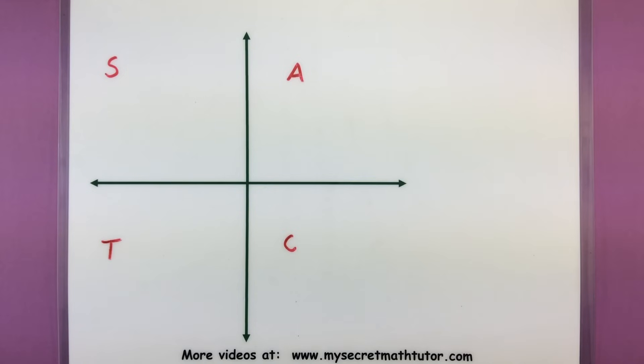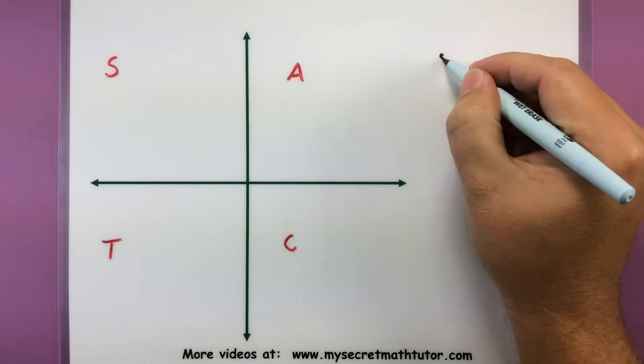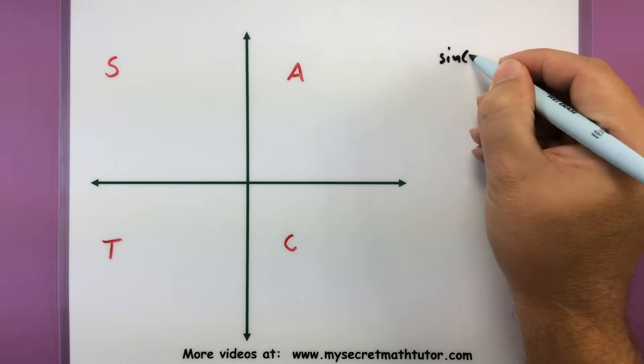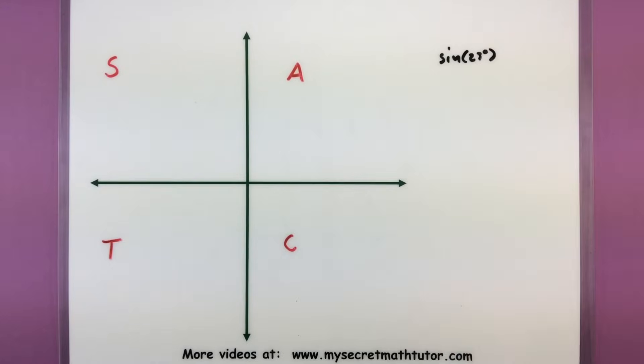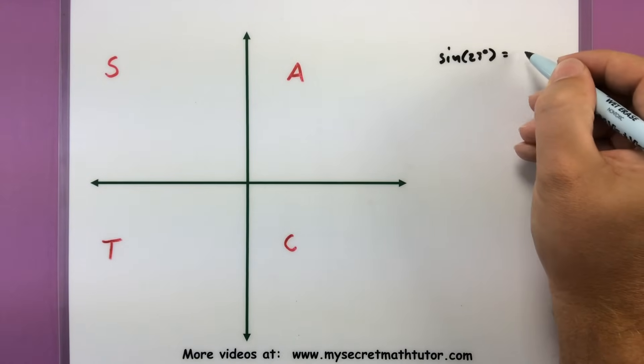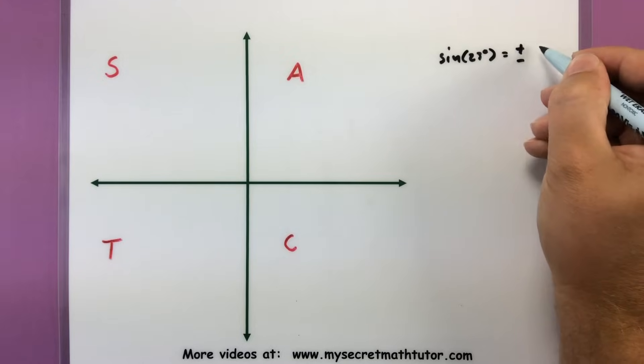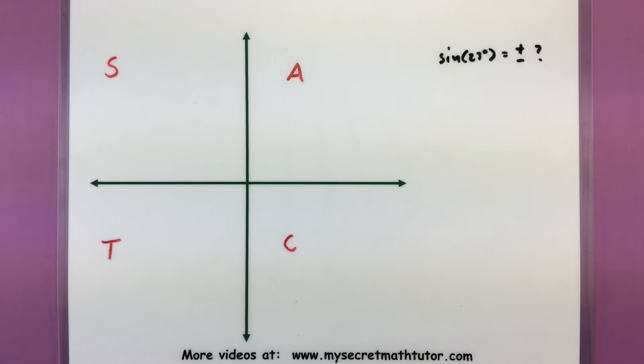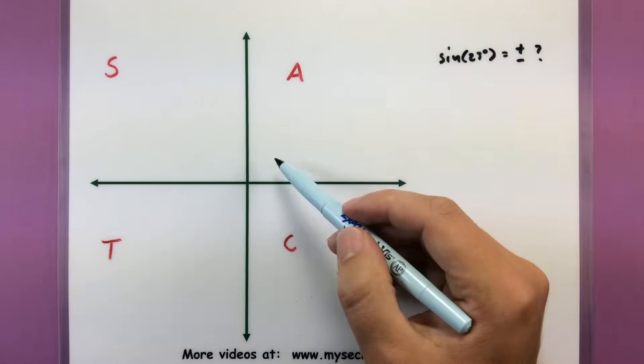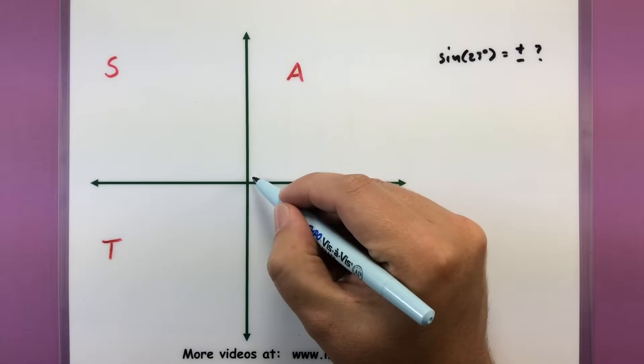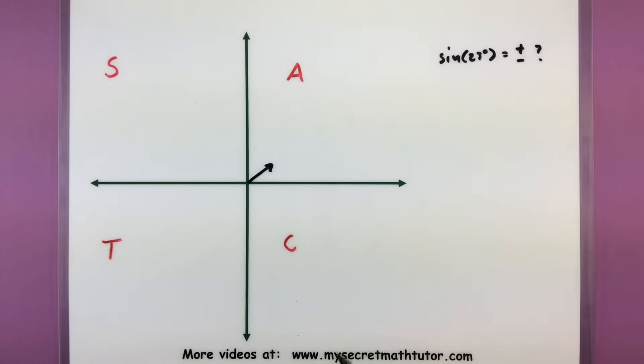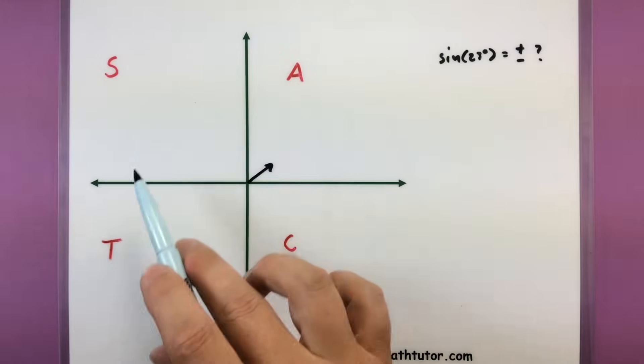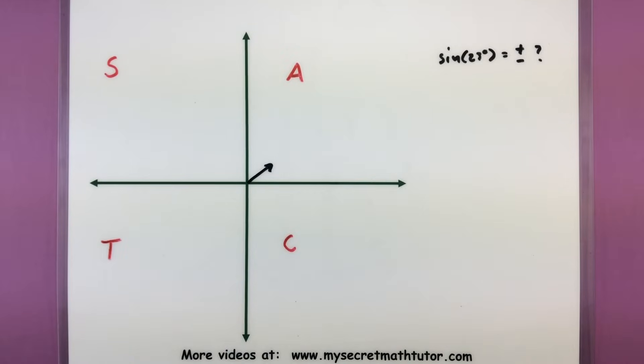You may have seen this before, maybe not, but this is actually a great way that you can easily memorize whether something like sine or cosine should be positive or negative. That's what I mean by the signs of the trigonometric functions. If you know what quadrant it's going to be in, then you can easily figure out what the sign is going to be.